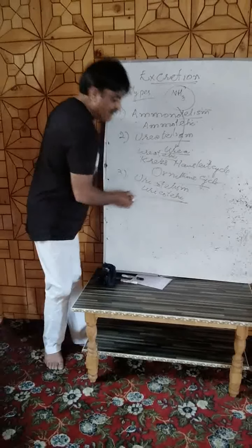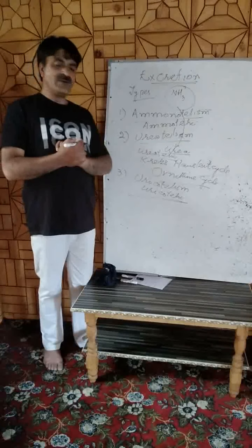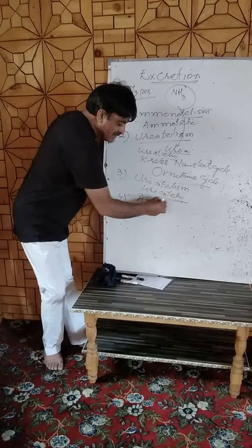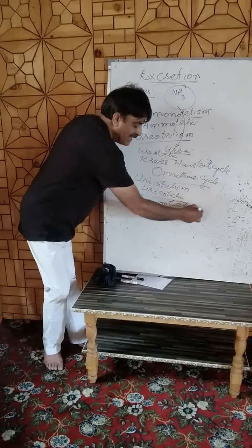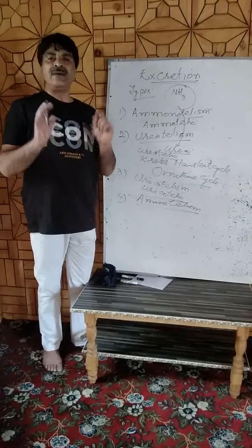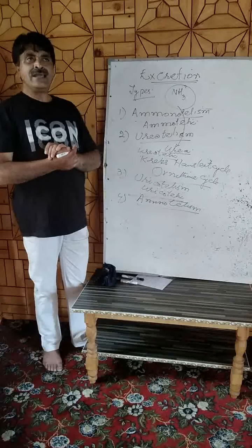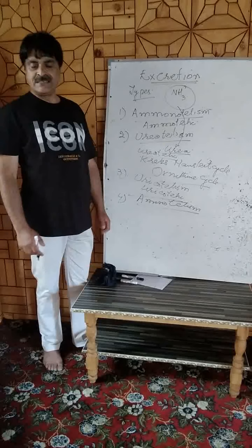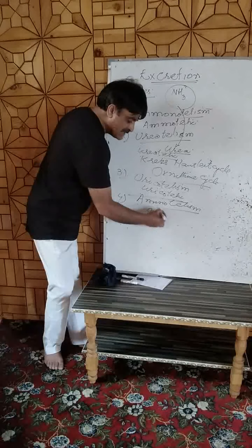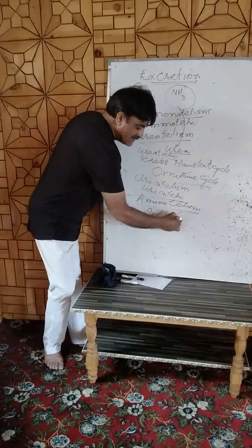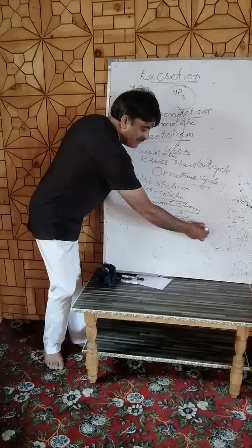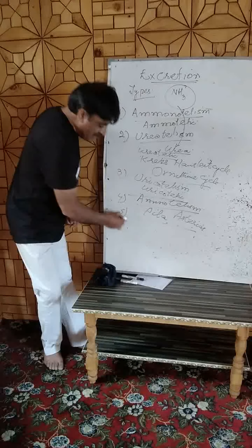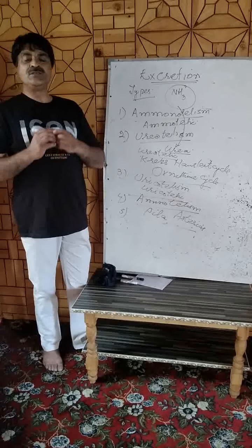There is another exceptional mode of excretion called aminotelism. There are certain animals that excrete amino acids directly from the body. Exceptional animals like Pila among Mollusca and Asterias among Echinodermata are called aminotelic animals.